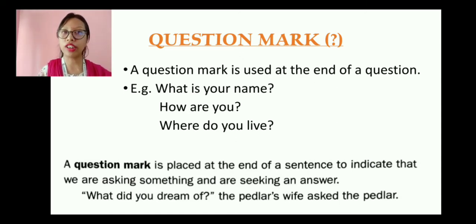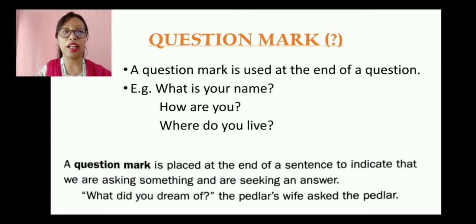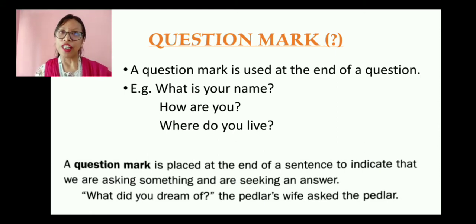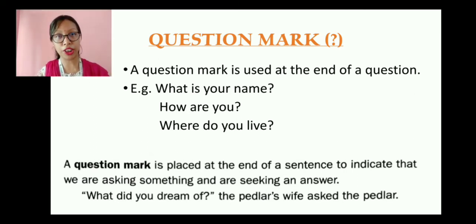For example: what is your name? How are you? Where do you live? So these are some examples. Now below is a cutout from your textbook: a question mark is placed at the end of a sentence to indicate that we are asking something and are seeking an answer. For example, 'What did you dream of?' — the peddler's wife was asking the peddler, so she was questioning him. This is how we ask questions, and whenever we ask a question, we always mark the question mark at the end of the sentence.